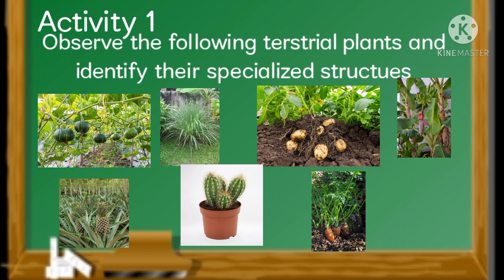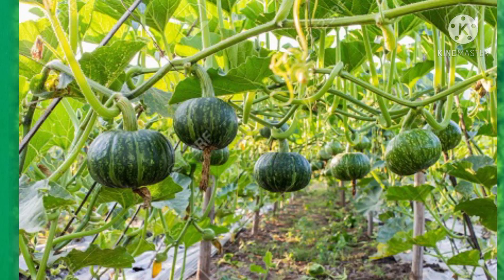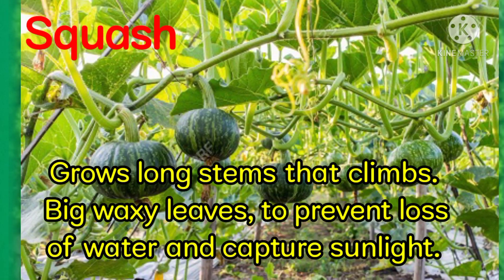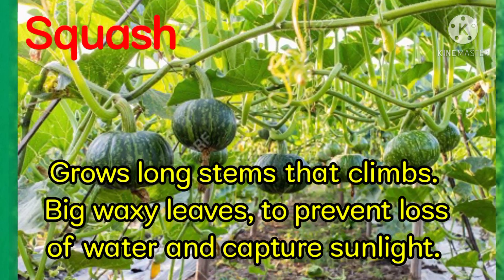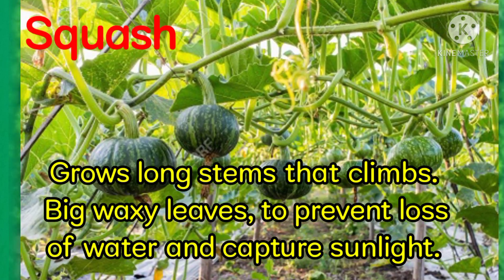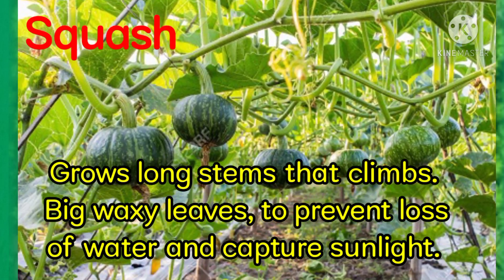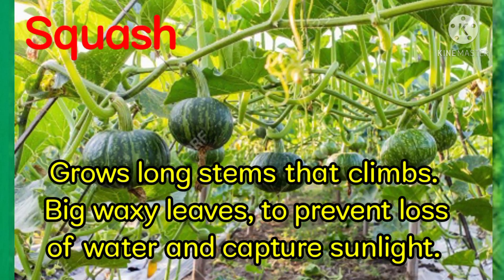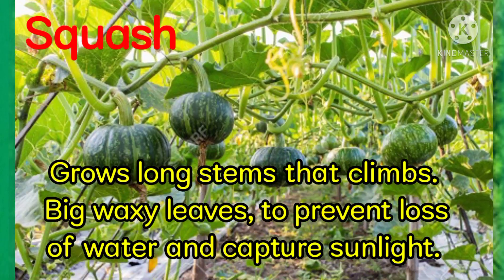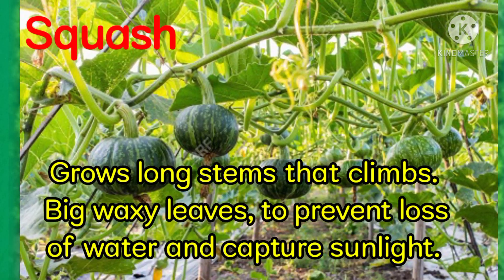Observe the following terrestrial plants and identify their specialized structures. Observe the squash — it grows long stems that cling. It has big, waxy leaves to prevent loss of water and capture sunlight.